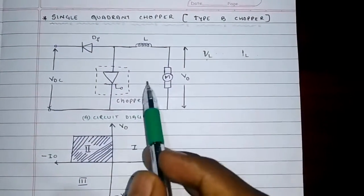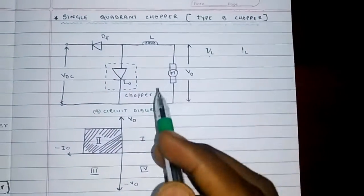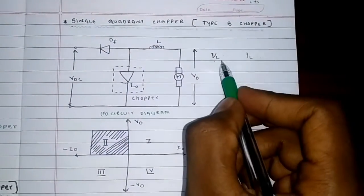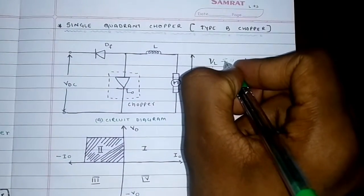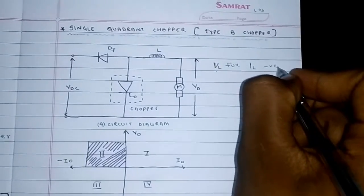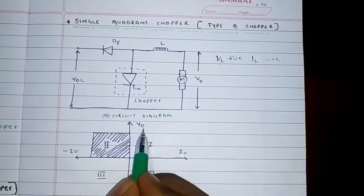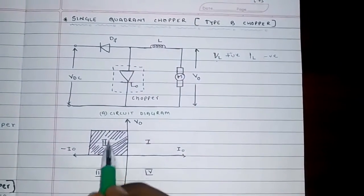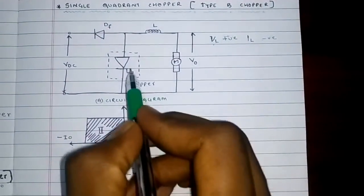To explain the operation of Type B chopper: the load voltage is positive and the load current is negative. These circuit parameters V₀ and I₀ place it in the second quadrant.